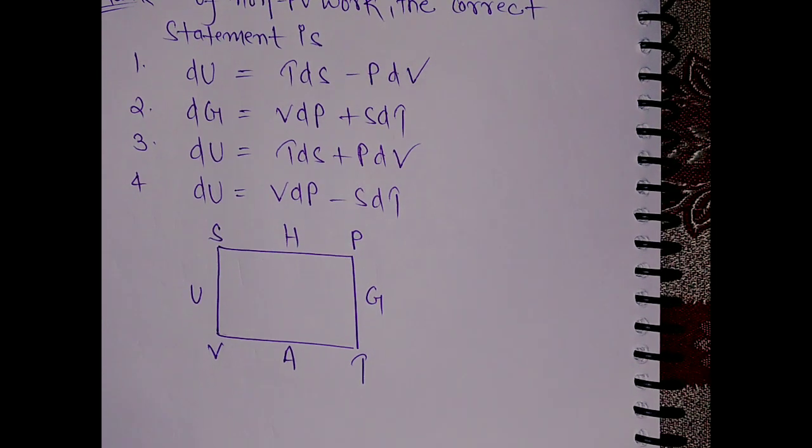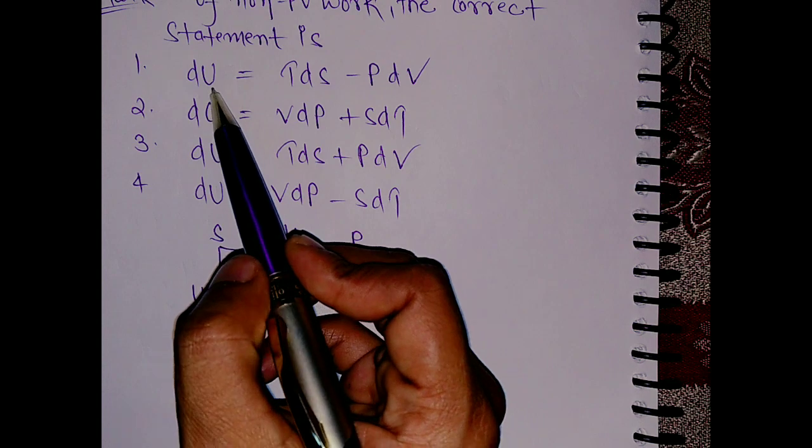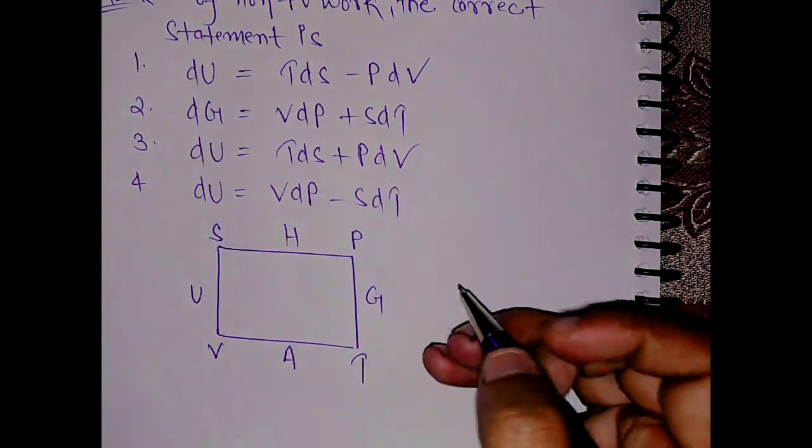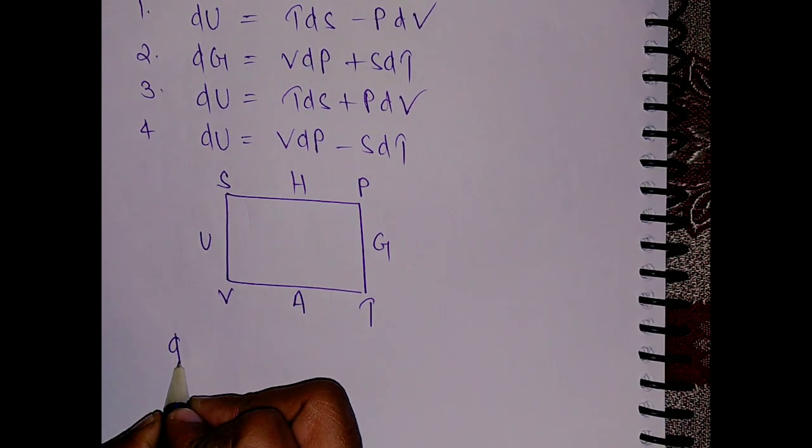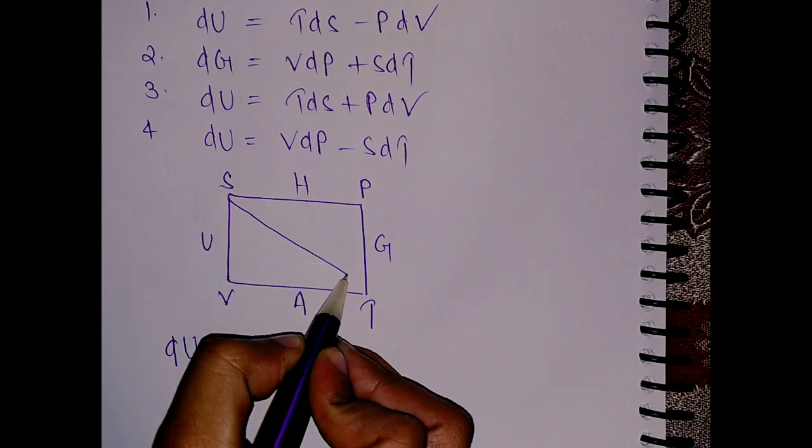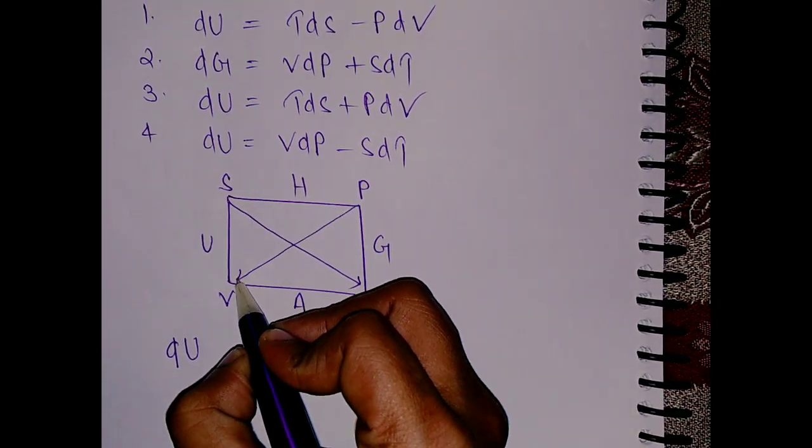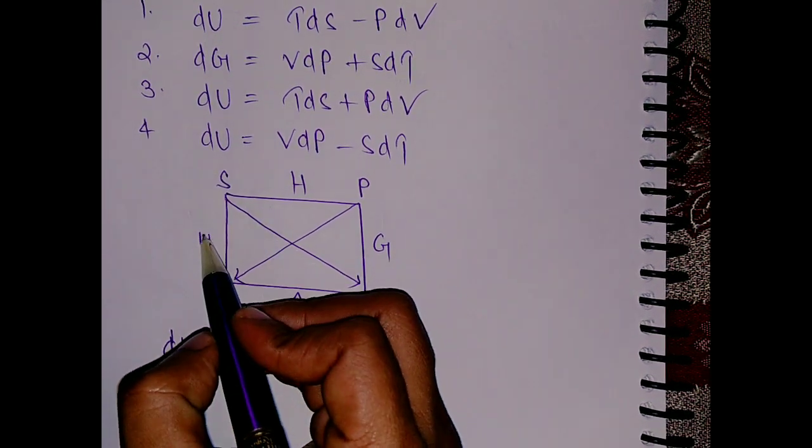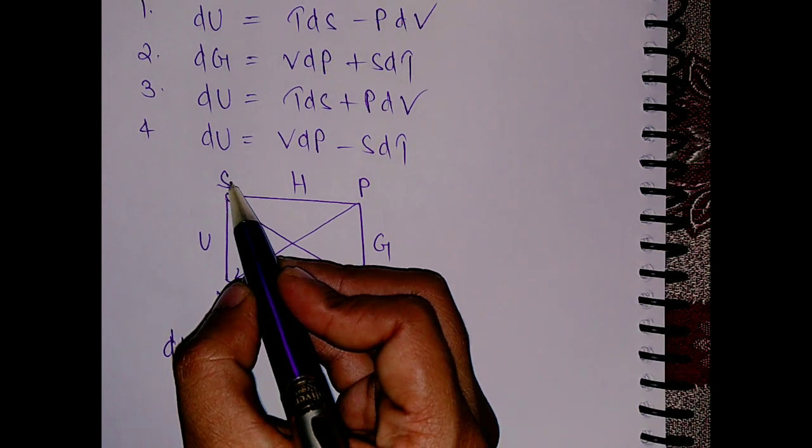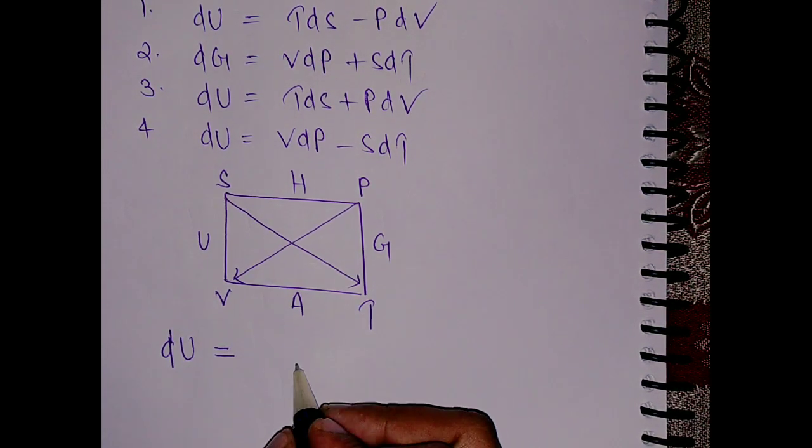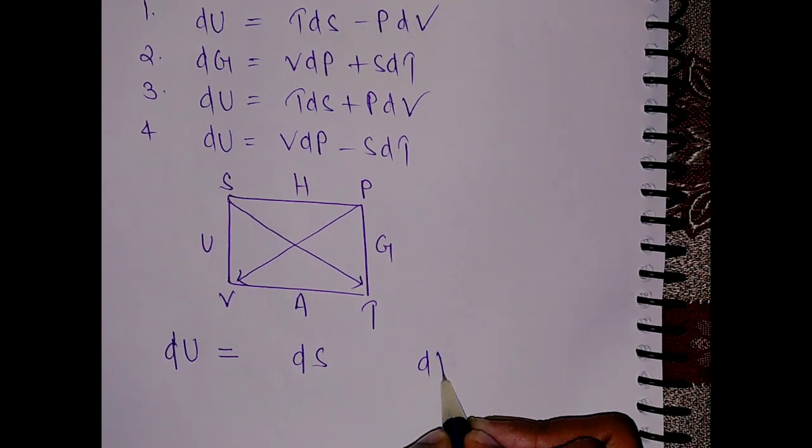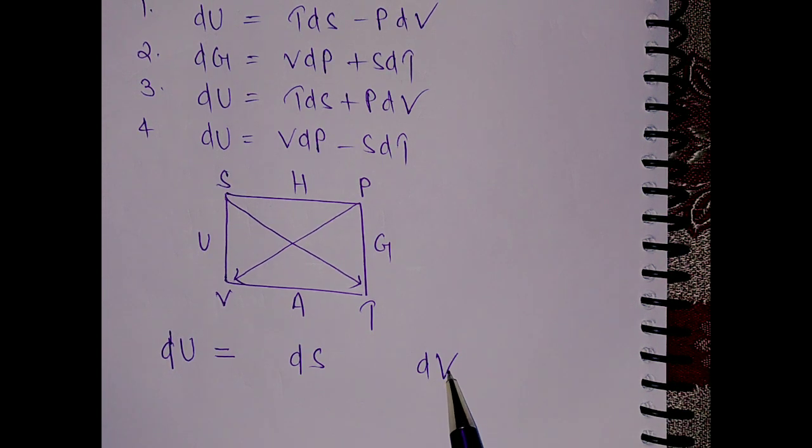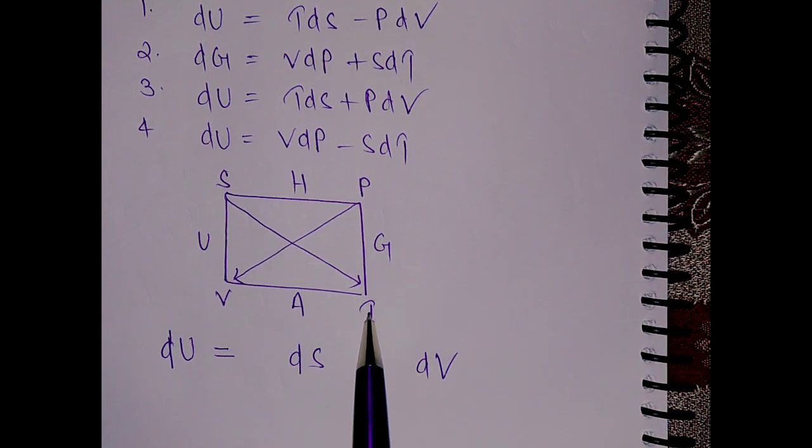What you have to write is dU. First of all, these three are dU, so let's start with dU and you have to make arrows in this way. For dU, we have adjacent parameters S and V, so write here dS and dV. This is S so dS, and this is V so write dV.